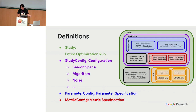A study is the entire optimization run, and a study config specifies the search space and algorithm. Parameter config specifies what type of parameter it is — floating point, categorical, et cetera. Metric config specifies whether we're maximizing or minimizing. In Vizier, the core parameter types are double, integer, discrete, and categorical. We also allow different scaling types like uniform or log scaling, especially for things like learning rates.